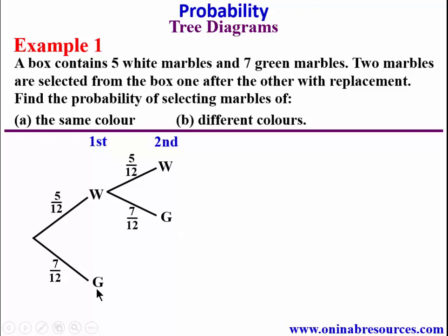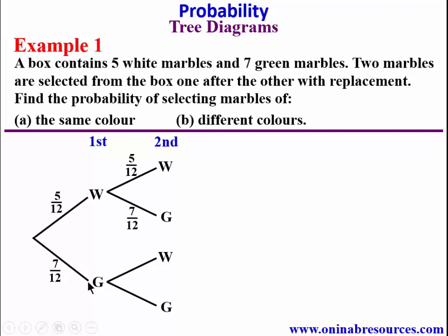Now we assume the first one is green and the second one may be white or green. Since it is with replacement, we still maintain 5 over 12 for white and also, for the second one to be green, we have 7 over 12.